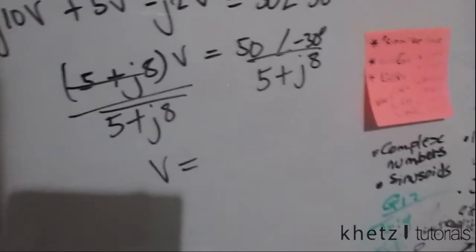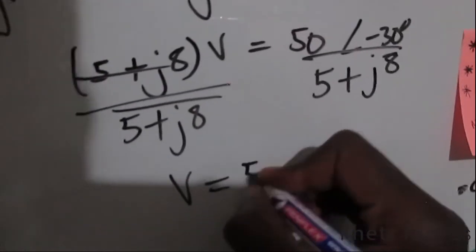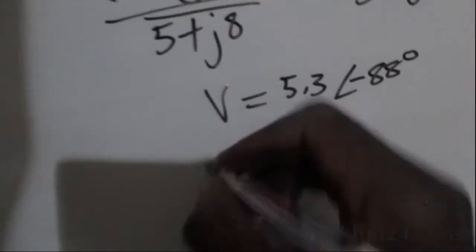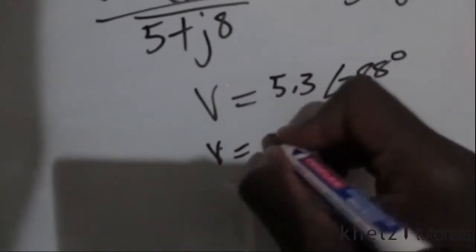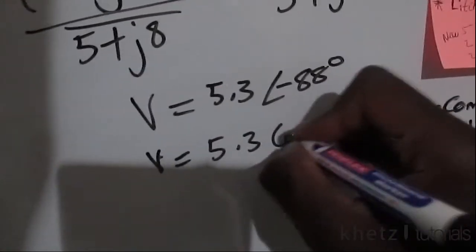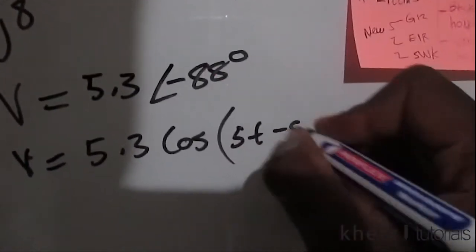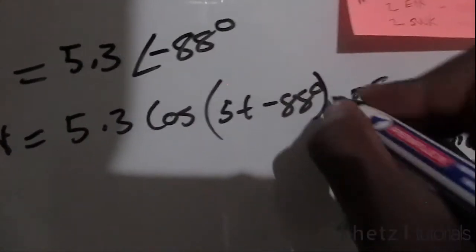So the result is 5.3 with an angle of negative 88 degrees. Now the corresponding sinusoid is 5.3 cosine, taking the same 5 which you found in the question, so 5t negative 88 degrees, and that is your voltage.